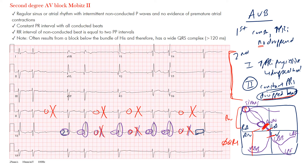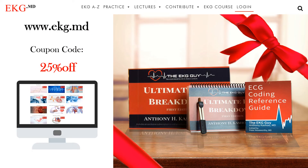These patients often get a pacemaker placed. The main thing to notice is the constant PR interval with all conducted beats. Hopefully you're able to differentiate between these blocks. In the next lecture, we'll look at complete or third degree heart block.